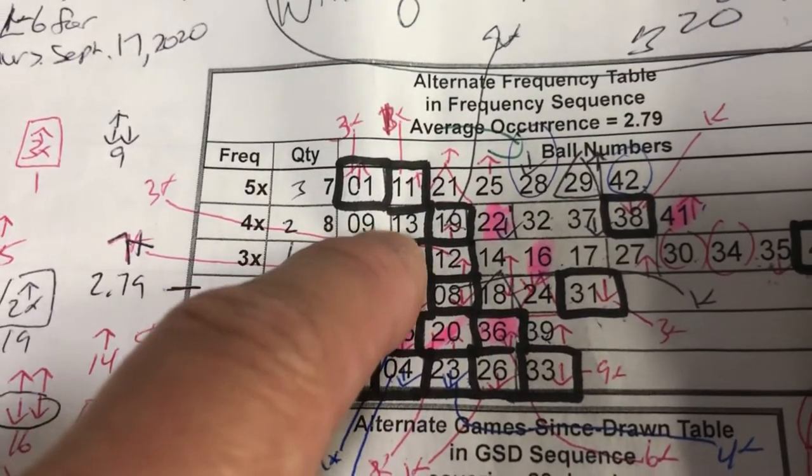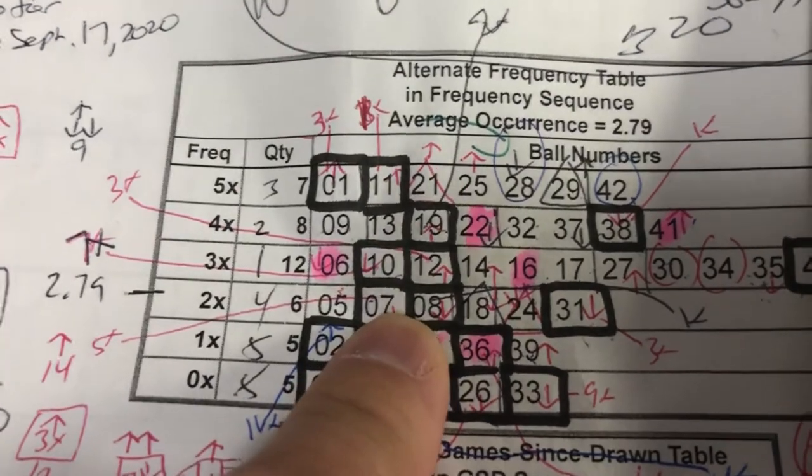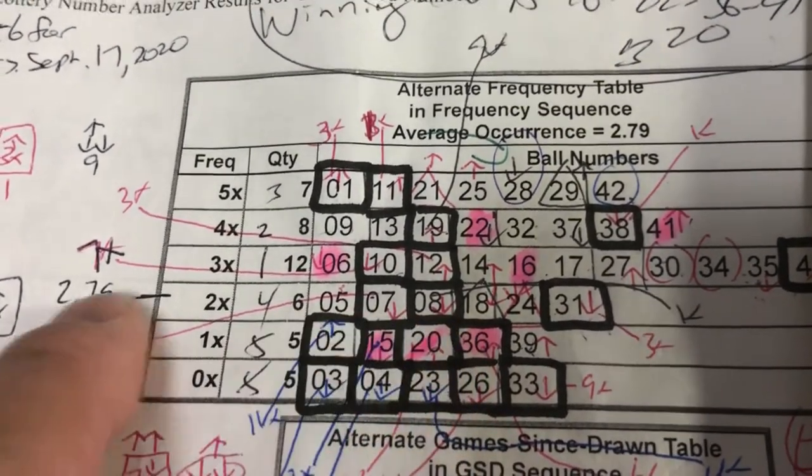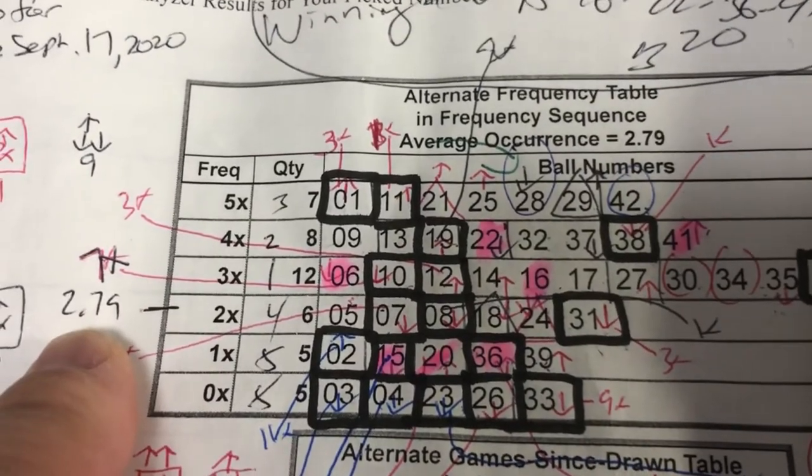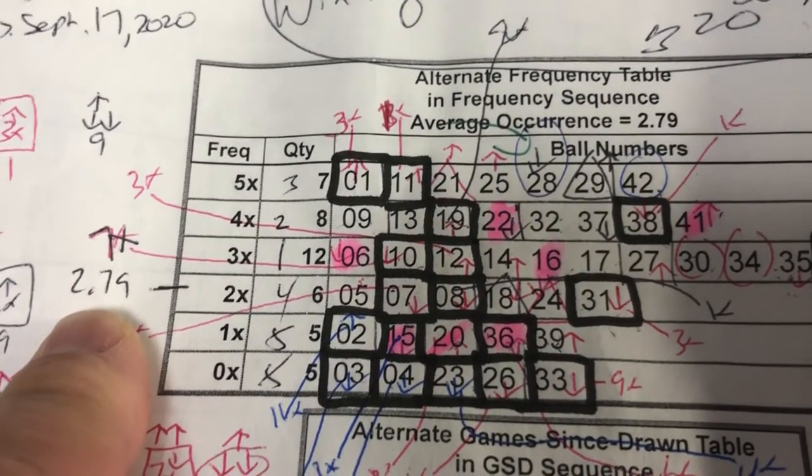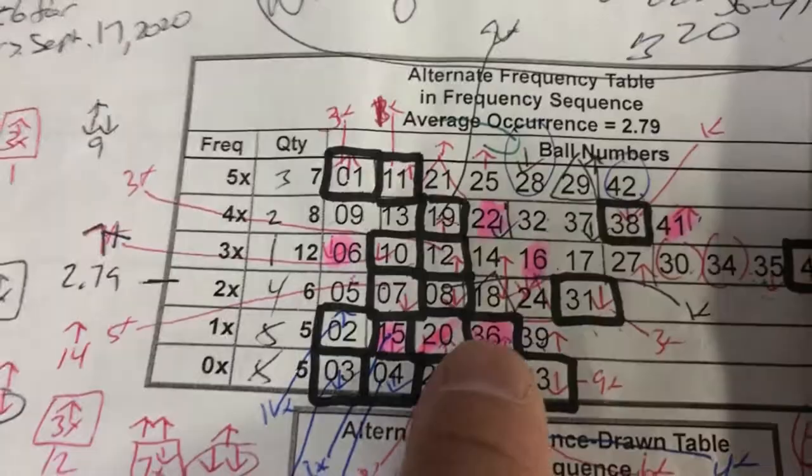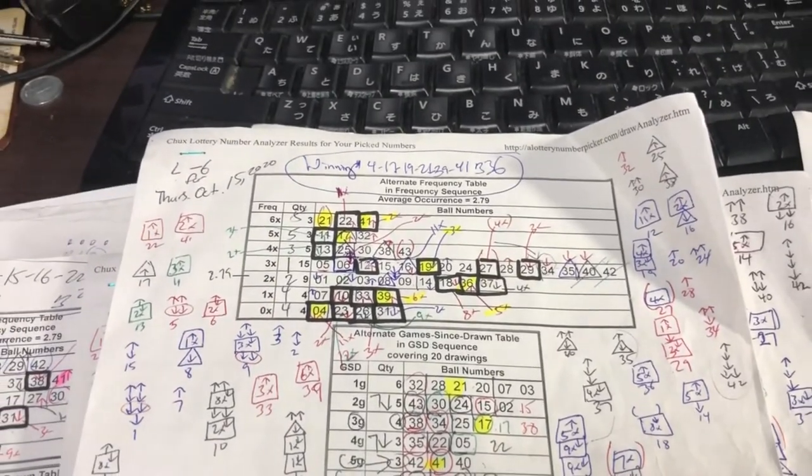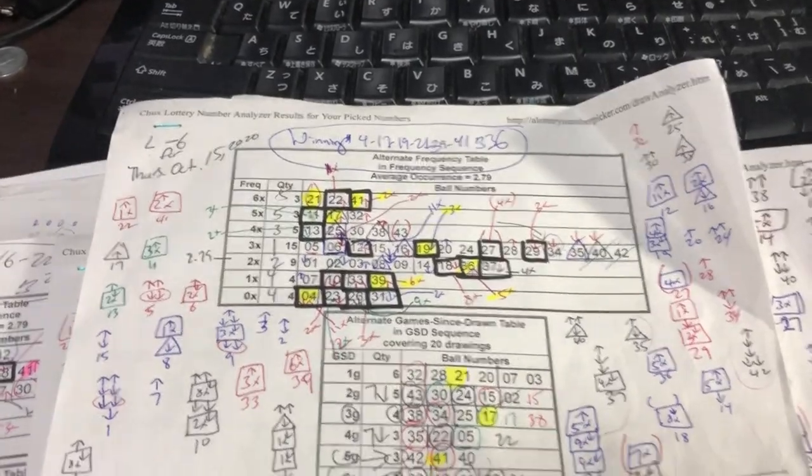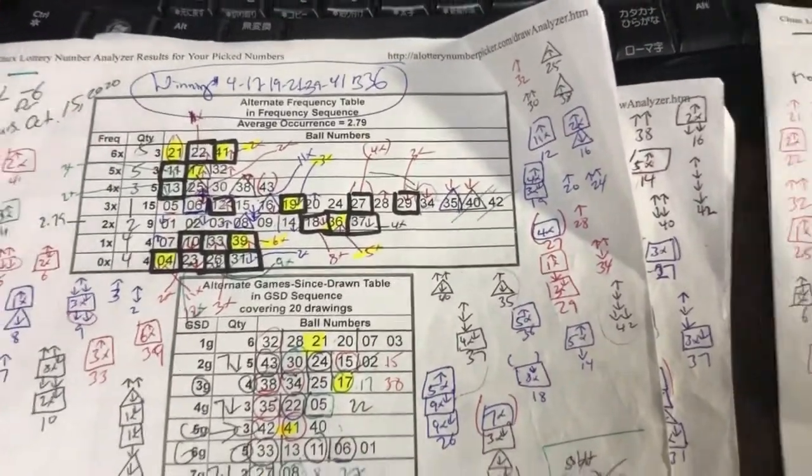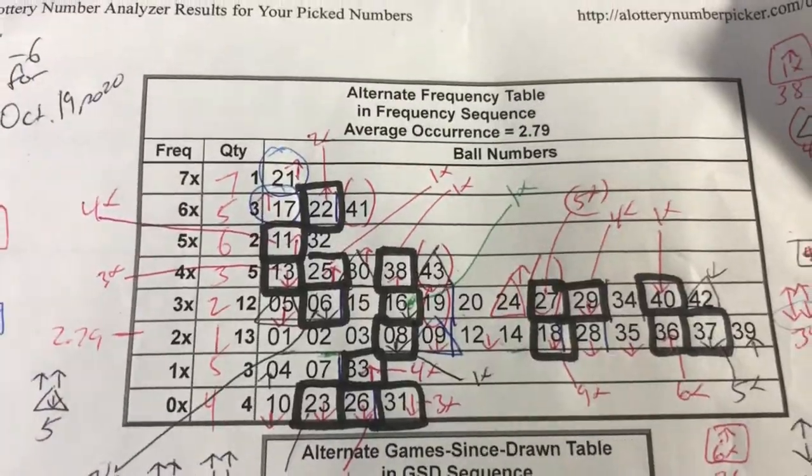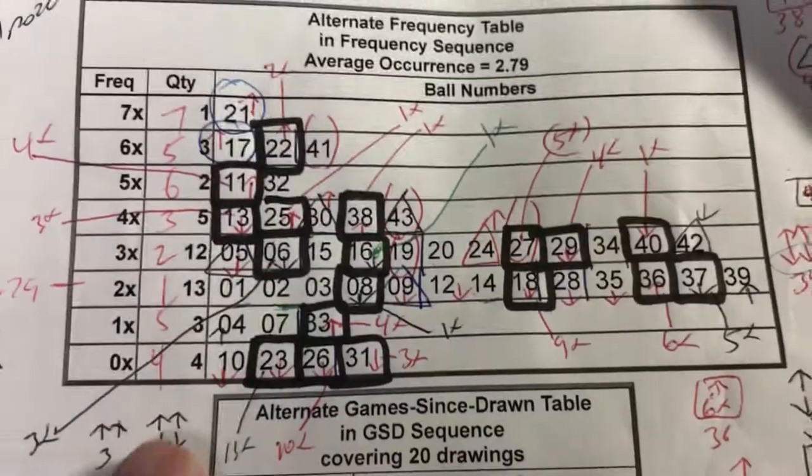So it traveled down to 2x, which is tier number three, and that is the average occurrence, 2.79. So this is my thinking. I think I'm just going to talk about arrows going down without a box in this video. So for today's draw, this is what I've got for numbers going down with arrows.